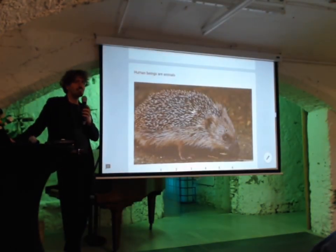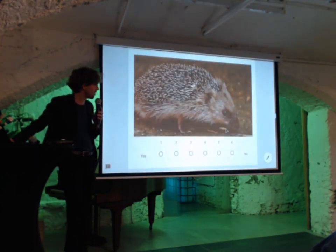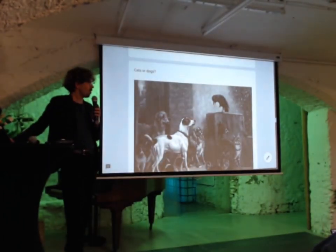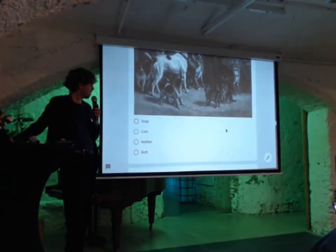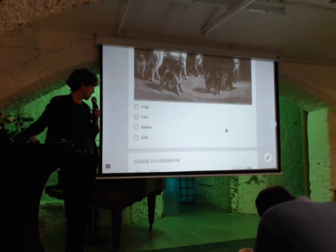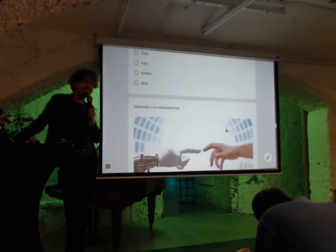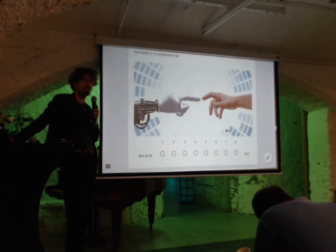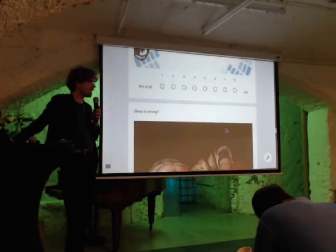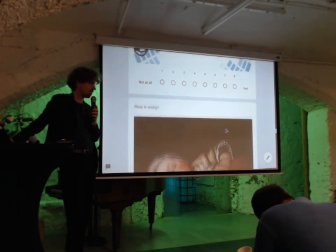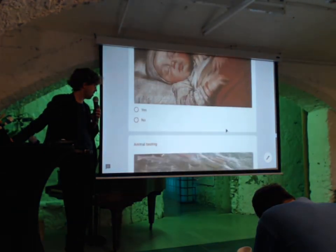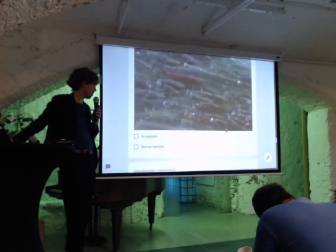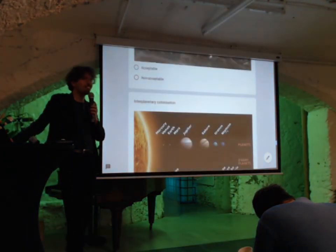Are human beings animals? You can rate that on a scale of one to six. Cats or dogs — dogs, cats, neither, or both. Humanity is in existential risk — some of you would say no, some yes. Sleep is wrong — yes or no. Animal testing — acceptable or non-acceptable. Interplanetary colonization — yes or no, no middle way. Aging is a disease.